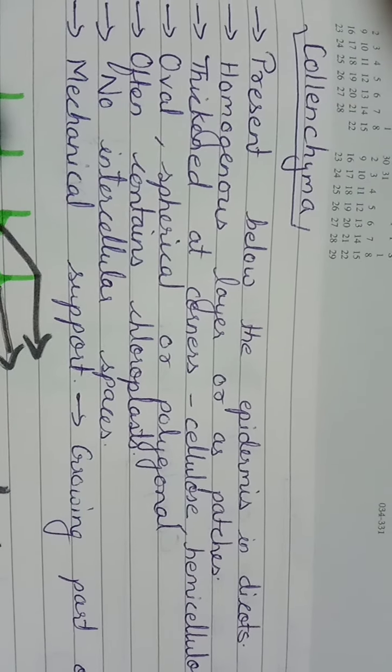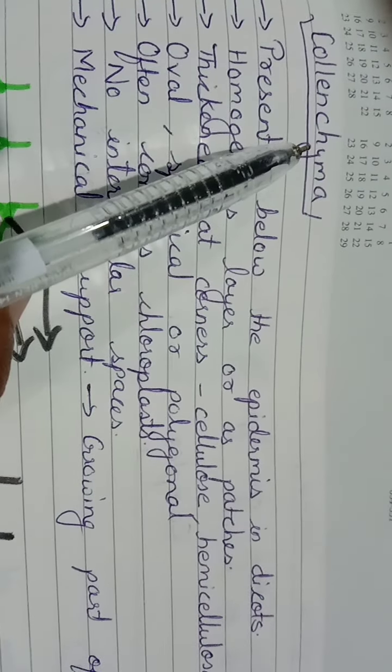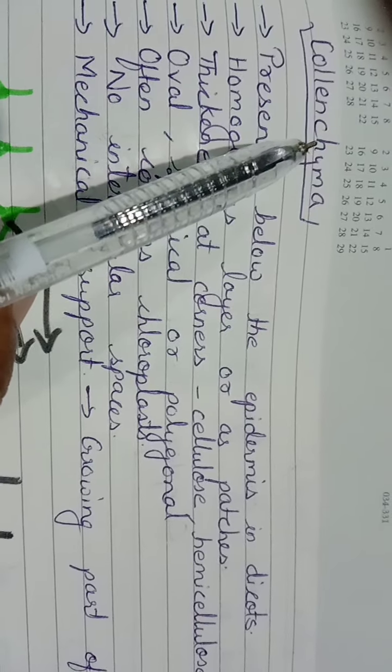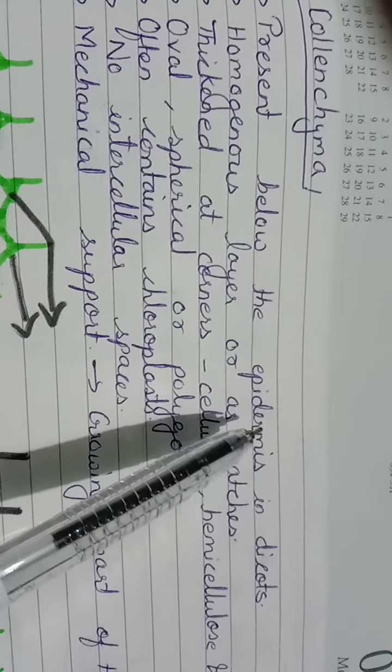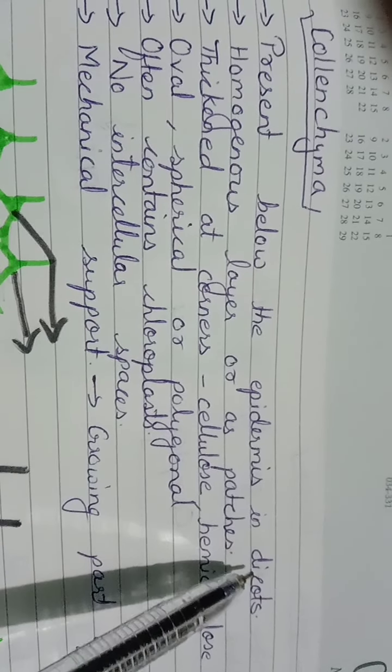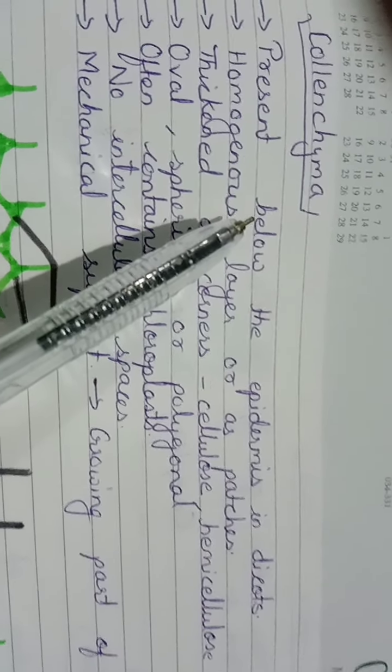Last class we discussed simple tissue parenchyma. Today we'll discuss colenchyma. It is present below the epidermis, especially in dicots, two to three layers below the epidermis as a homogeneous layer or sometimes as patches.